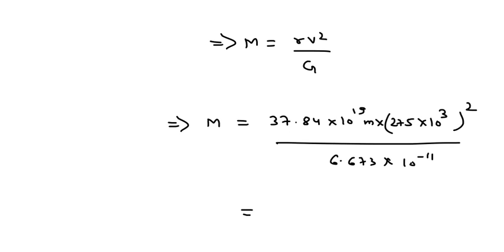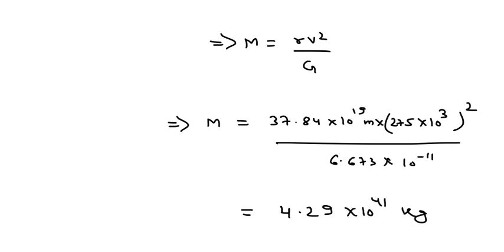On simplification, I get the total mass of the galaxy as 4.29 multiplication 10 to the power 41 kg. Now for part B.